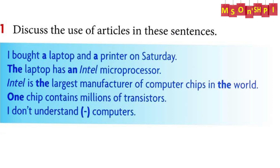Discuss the use of articles in these sentences. The first sentence: I bought a laptop and a printer on Saturday. The words laptop and printer are referred to for the first time, and that's why we use indefinite articles. The laptop has an Intel microprocessor — laptop is referred to for the second time, and Intel microprocessor is referred to for the first time with An.